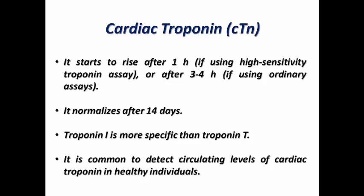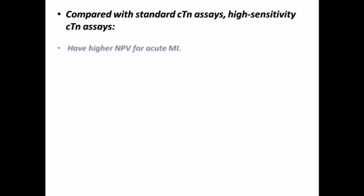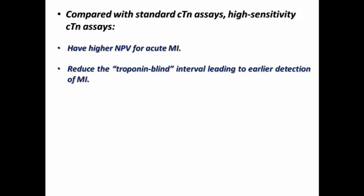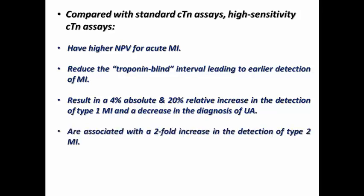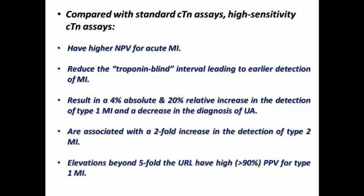That's why we don't depend on just one set — we depend on at least two sets or more to detect a rise or fall to diagnose MI. Comparing standard troponin assay with high-sensitivity troponin assay, the advantages favor the high-sensitivity assay: higher negative predictive value for acute MI, reduction of the troponin blind interval, with the rise starting after 1 hour rather than 3-4 hours, resulting in a 4% absolute and 20% relative increase in detection of type 1 MI, a two-fold increase in detection of type 2 MI caused by oxygen supply-demand mismatch, and elevation beyond 5-fold the upper reference limit having high predictive value for type 1 MI.